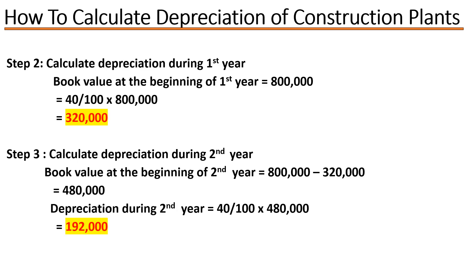Now let's calculate the depreciation during the first year. The book value at the beginning of the first year was 800,000, and our depreciation percentage is 40%. So the depreciation during the first year is: 40/100 × 800,000, giving us 320,000.